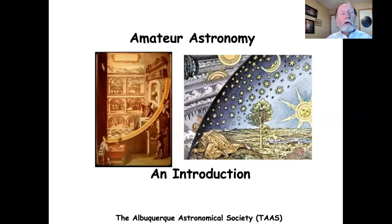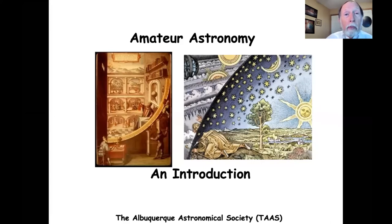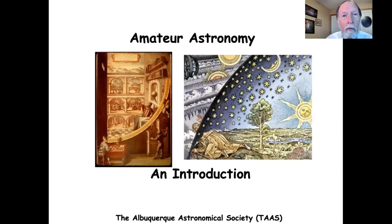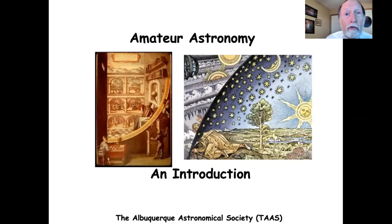The Albuquerque Astronomical Society, or TAAS, is one of the largest astronomy clubs in the country. We have over 300 active members, a private observatory, and a number of telescopes that we lend to our members. We also have an active educational and public outreach program, and our motto is observe, educate, and have fun. You can find out about our activities and schedules at our website and Facebook page, and I'll give more details about that at the end of this discussion.